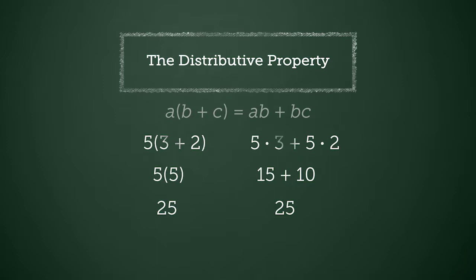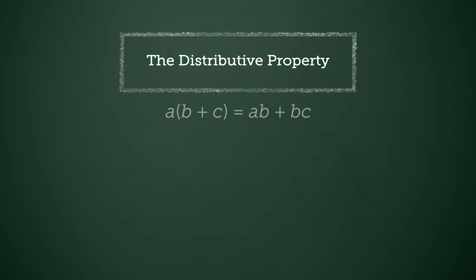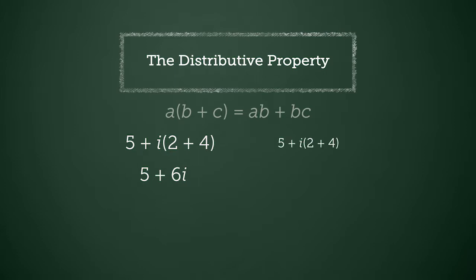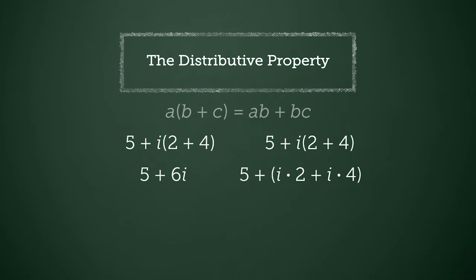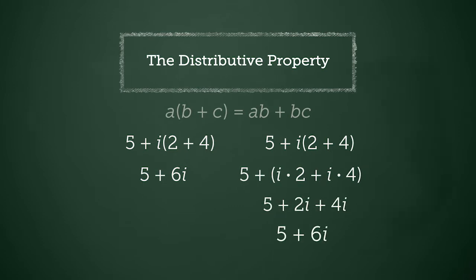This also applies to complex numbers. In this example, you can add first to get 5 plus i times 6, or 5 plus 6i. The distributive property allows you to also distribute the i: 5 plus i times 2 plus i times 4. This would also simplify to 5 plus 6i.